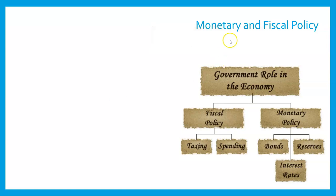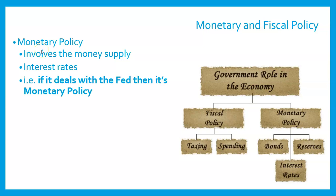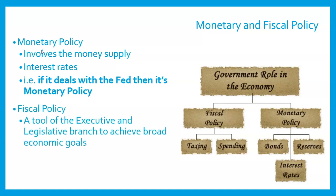Another term you could see is fiscal policy. This is something that Congress does. Monetary policy involves the money supply and interest rates — what we were just talking about with the Federal Reserve, how much money is flowing through the economy. If it deals with the Fed, it's monetary policy. Fiscal policy is the more traditional executive and legislative branches using tools of government to achieve their economic goals.